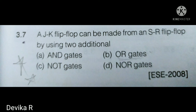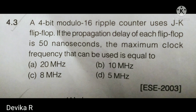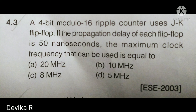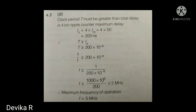The next question involves a 4-bit ripple counter where each flip-flop has a 50 nanosecond propagation delay. The total delay is 4 × 50 = 200 nanoseconds. The maximum frequency is 1 / 200 ns, which gives 5 MHz as the answer.